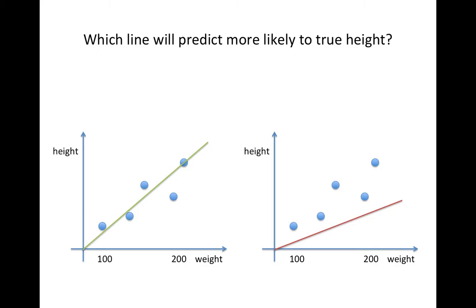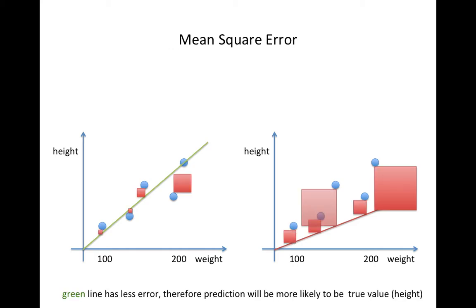Now we understand how to find a better linear line. Can we prove why the green line is better than the red line in the right chart? Yes — using mean square error, which is the average of the square error, we can see the green line has less average square error.